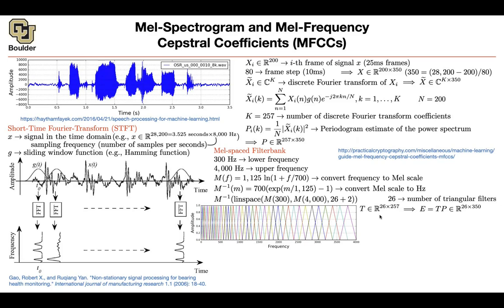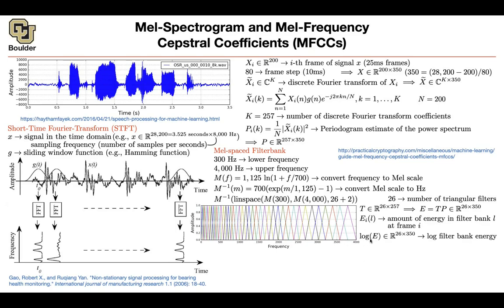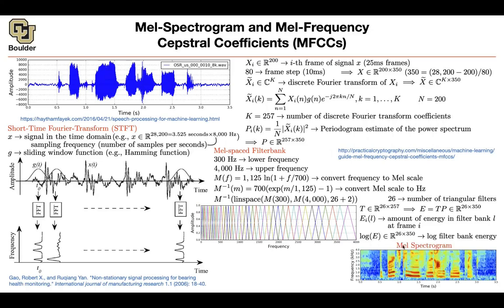Why are you doing that? Because now you can multiply P — your power spectrum — by the filter bank matrix T. That enables you to compute the total energy. So E_{i,l} is the amount of energy in filter bank l at time frame i. The time frame dimension stays at 350. The matrix multiplication sums over 257 numbers — most are zero, and the non-zero ones give you the energy inside that triangle. If you take a log of that, you get a log mel-spectrogram, which is usually what your deep neural network sees.